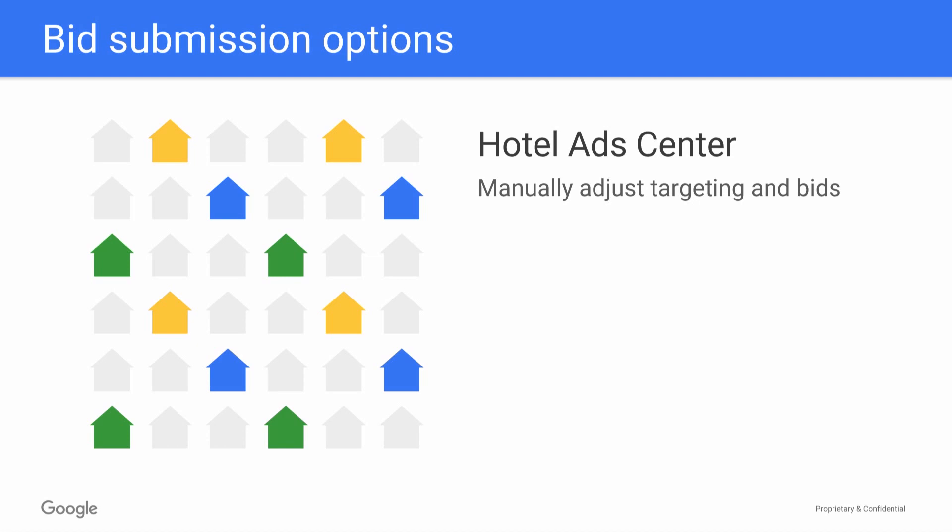As the first option, you can manage hotel ads directly through Google Hotel Ads Center. You can log in directly to the front end to manage your hotel ads account, to view performance, and to adjust the bids for your property.